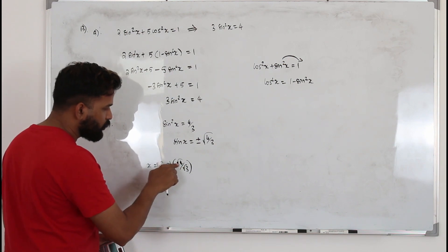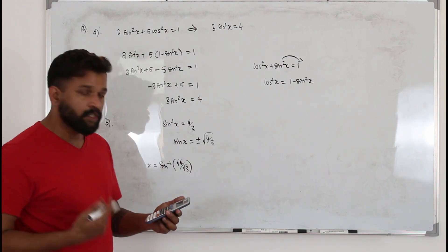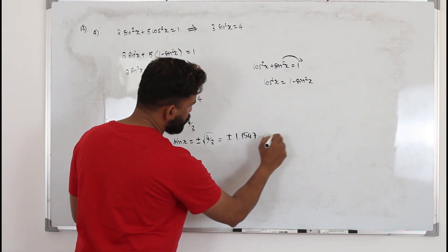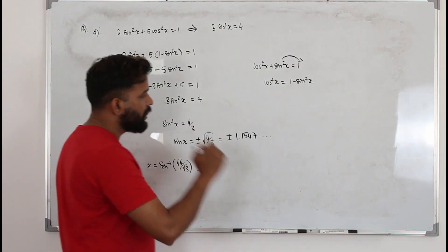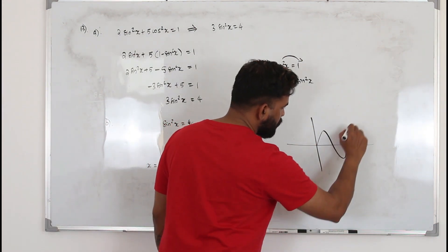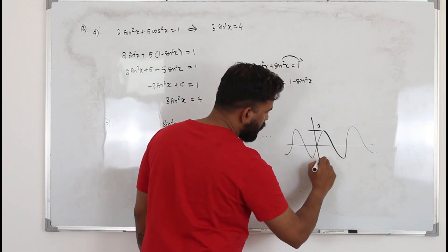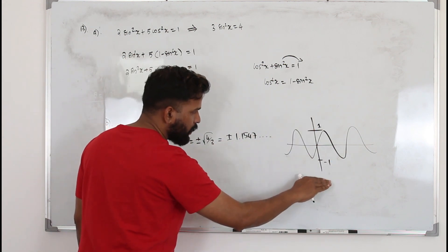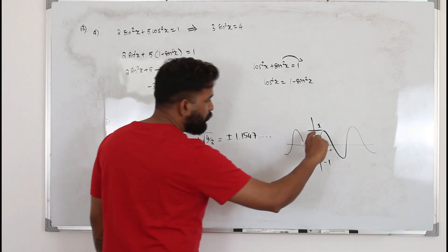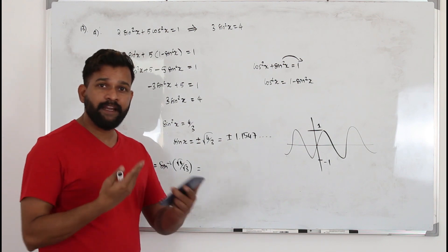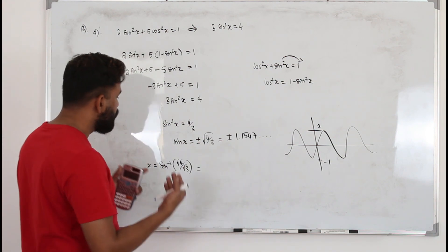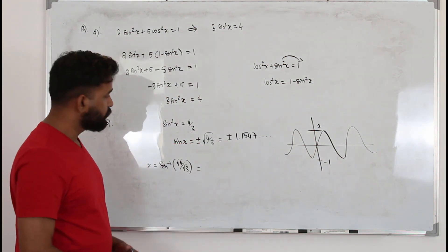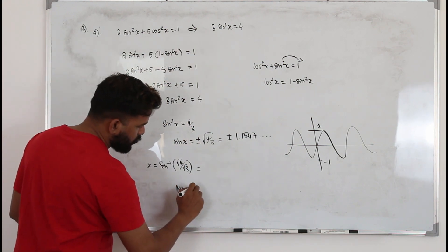The value of √(4/3) = √4/√3 ≈ ±1.1547. Looking at the sine graph, the maximum value is 1 and the minimum is −1. Since sin x only takes values between −1 and 1, any value greater than 1 or less than −1 gives no solution. Therefore, since 1.1547 > 1, this equation has no solution.